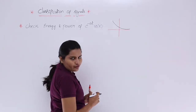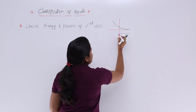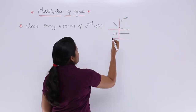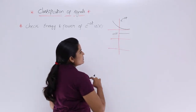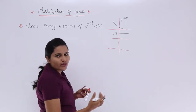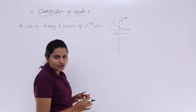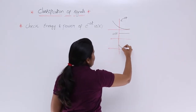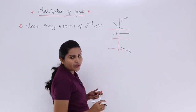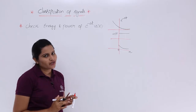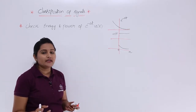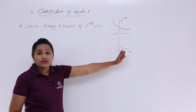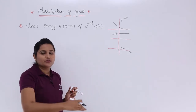The unit step signal u(T) has value only at the positive x-axis. If this is u(T) and this is e^(-aT), then multiplying these two signals gives a resultant where only the positive x-axis portion survives. So the shape of e^(-aT)u(T) starts at 0 and ends at infinity — it is an infinite duration signal starting from 0.